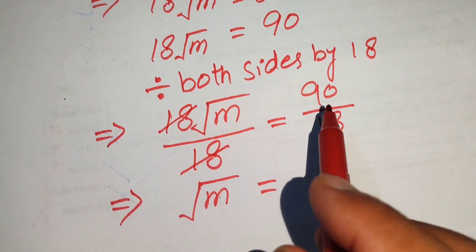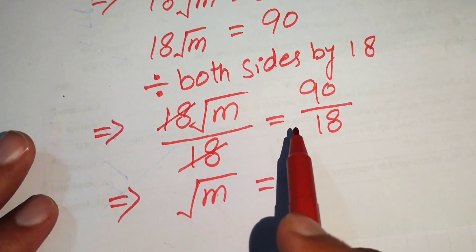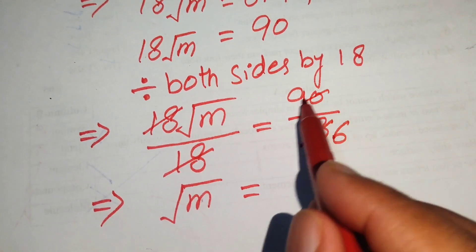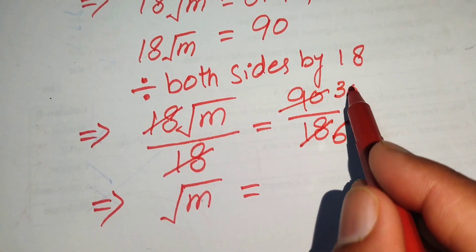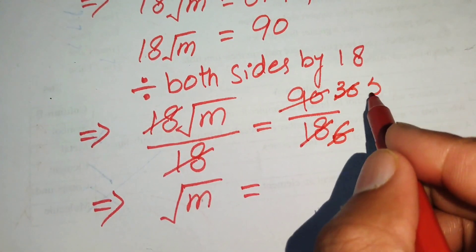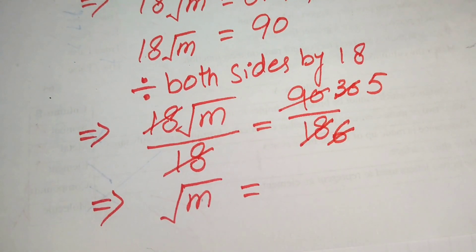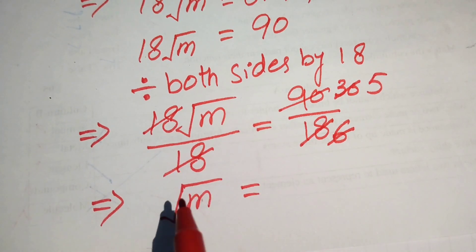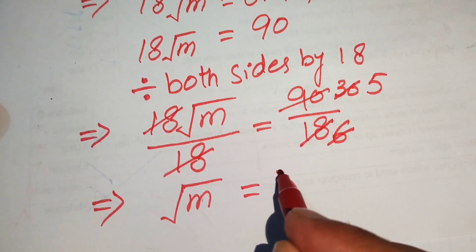We cancel 90 by 18 using the table of 3: 3 times 6 is 18, 3 times 3 is 9, and 6 times 5 is 30. After cancellation we have square root of m equals 5.